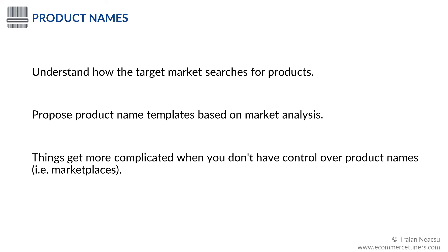The person or the team that adds new products to the catalog should be trained to understand how your target market searches for those products, and should propose product name templates based on that data. This is not a complex process — if you want to make sure you don't mess up the product names, add just the shortest product name in the database and then, programmatically, add other relevant product attributes to it. Product naming gets more complicated when you don't have control over product names — for example, if you're running a marketplace where suppliers upload product sheets. In this case, naming conventions are hard to create and enforce, and it may be better to let suppliers use open text fields for product names.